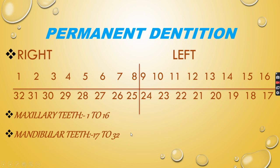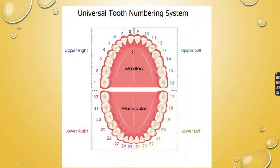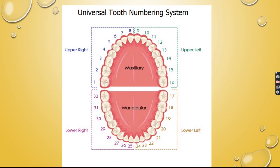Mandibular teeth run 17 to 32 — always in clockwise direction. Looking at the permanent dentition image: 1 to 8 is the upper right quadrant, 9 to 16 is the upper left quadrant, 17 to 24 is the lower left quadrant, and 25 to 32 is the lower right quadrant. Can anyone tell me the advantages of the Universal tooth numbering system?